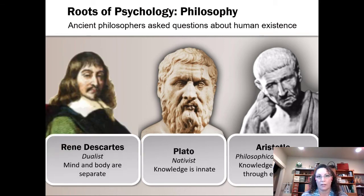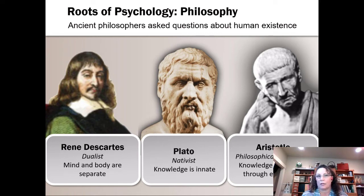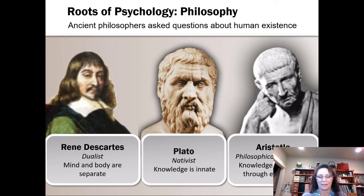A more modern philosopher would be René Descartes. I threw him in because of his arguments on whether your mind and body are one thing. He thought no—they're two separate things. He thought that your mind is a separate entity; some people call it your soul. Your body is just your earthly vessel, and when your body dies, your soul goes on to another life or to heaven. So he was what we call a dualist. Monists, on the other hand, are philosophers who think that your mind and body are one, and so when your body dies, your mind goes with it.